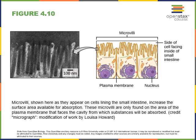Microvilli are smaller extensions of the plasma membrane on the surface of epithelial cells. Their function is to increase the surface area of a cell. An example is found lining the digestive tract — microvilli in the small intestine increase the surface area available for nutrient absorption, maximizing the amount of surface area to absorb nutrients across.